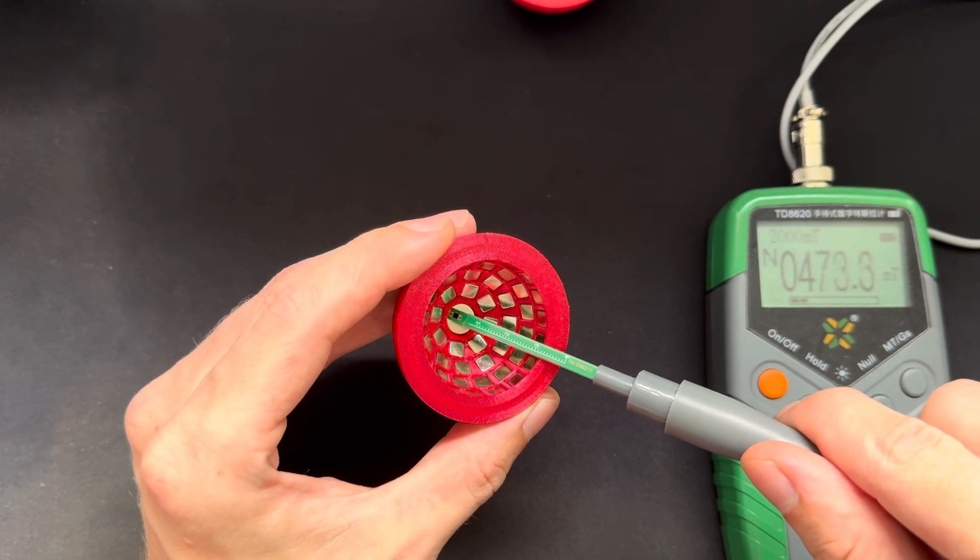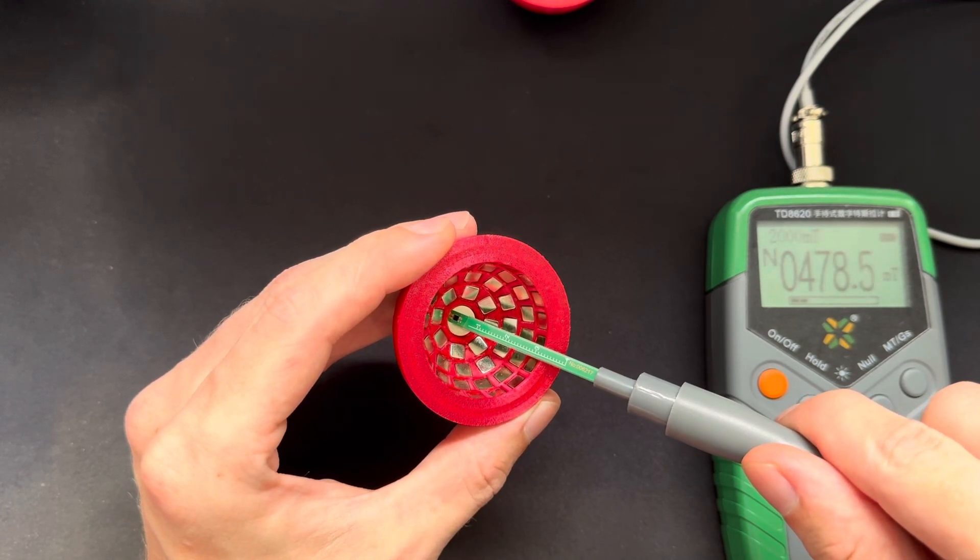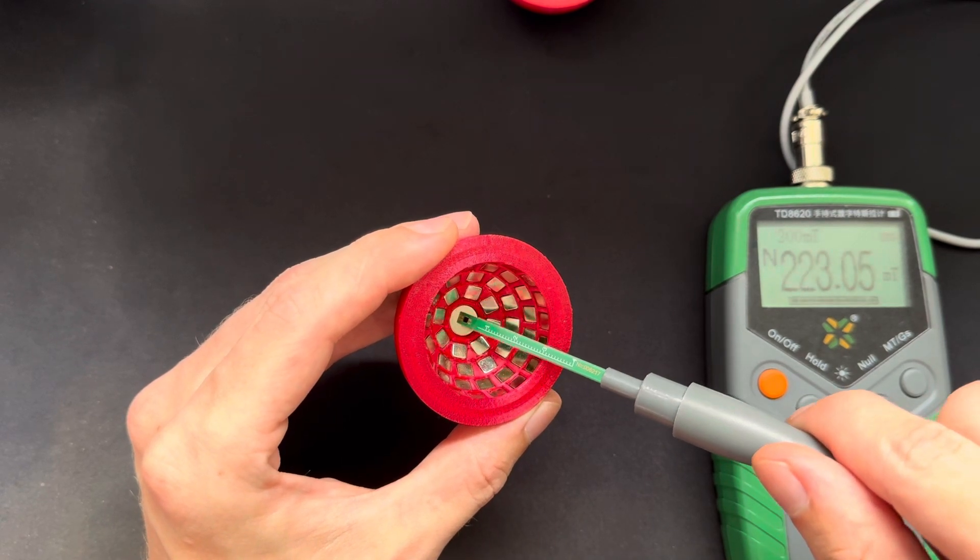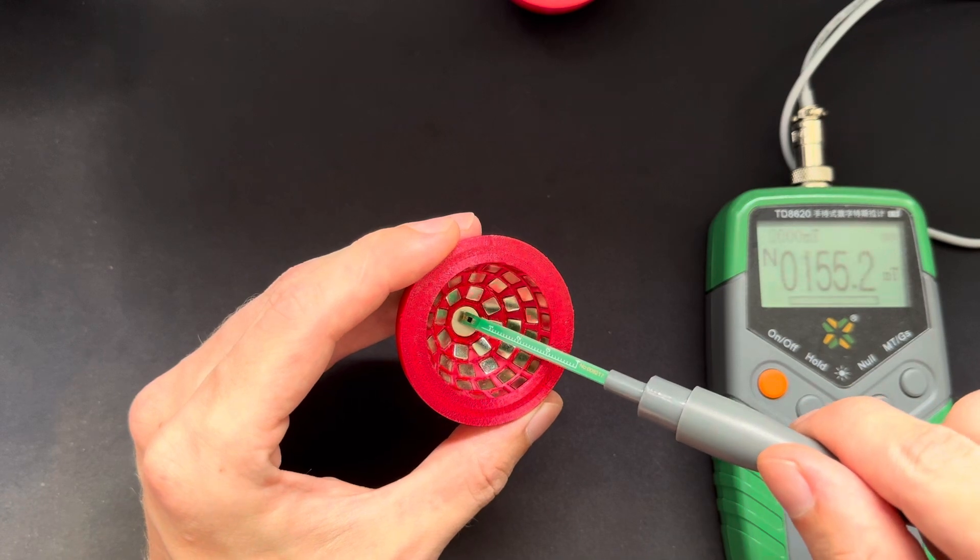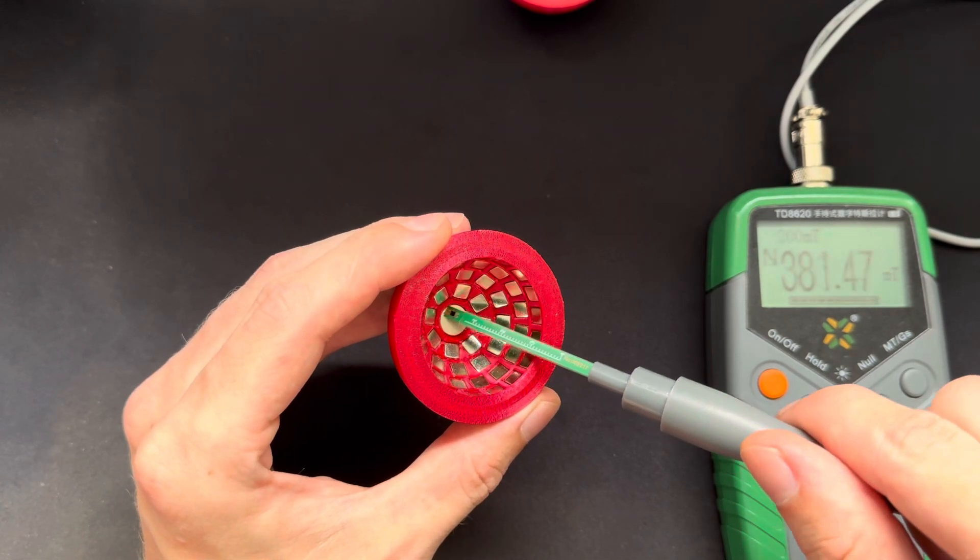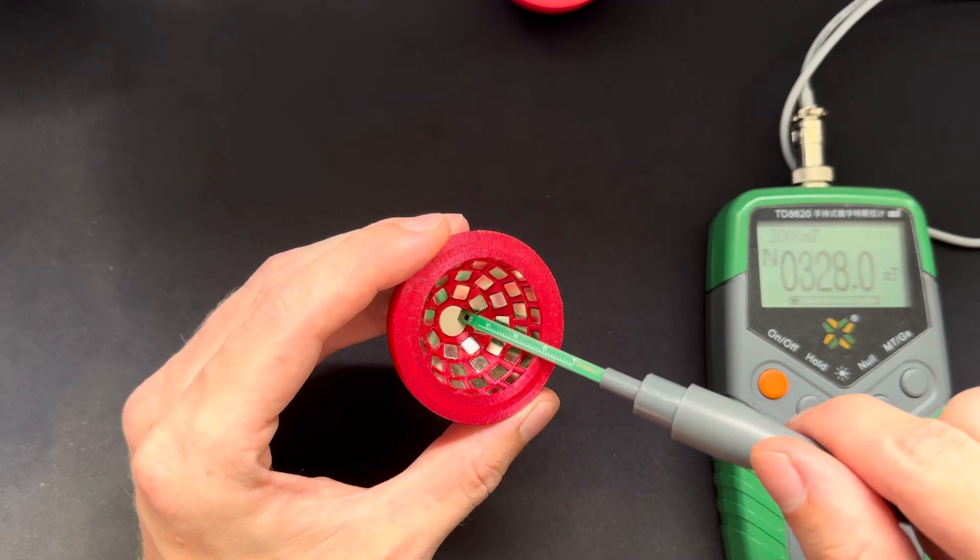And as you can see we get readings of over 470 millitesla which is impressive because the disc magnets itself don't have that strong of a field. So it kind of compresses the field on the inside here very much.